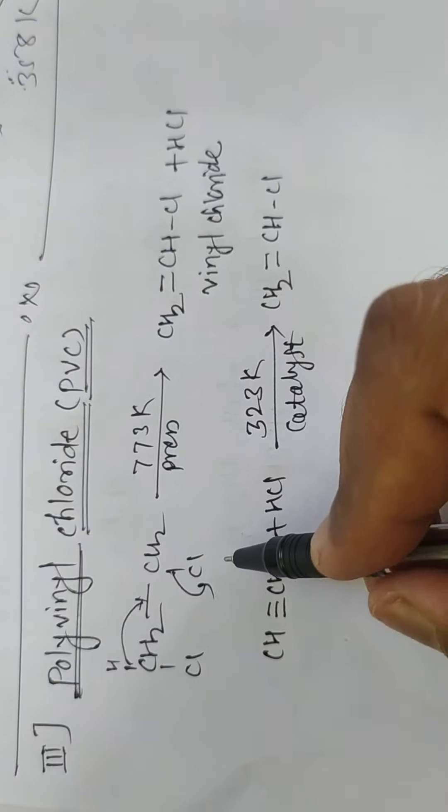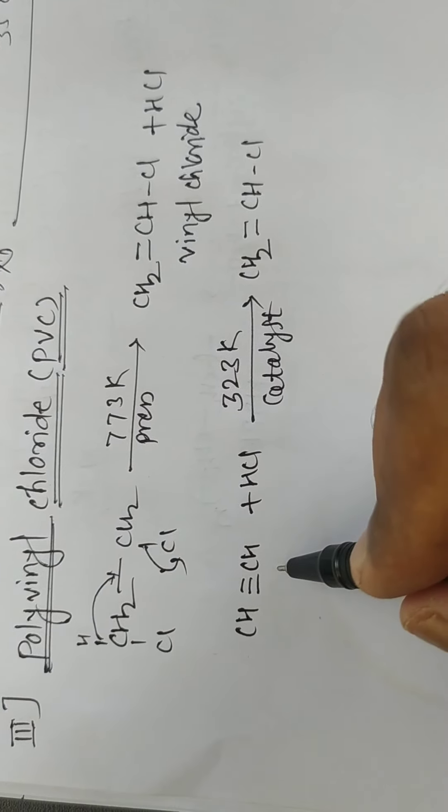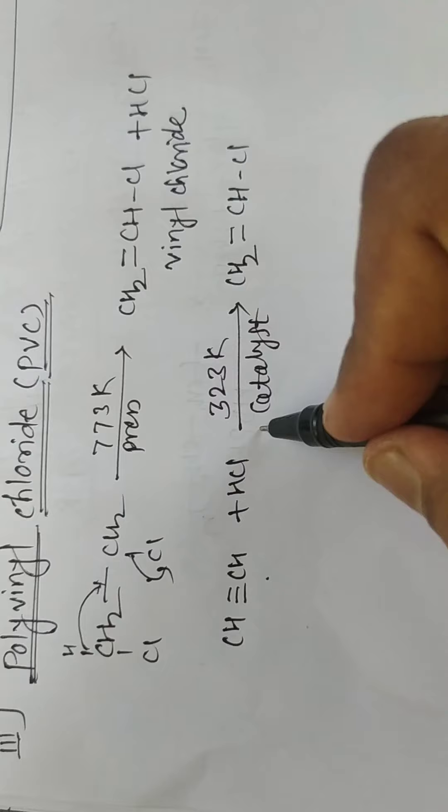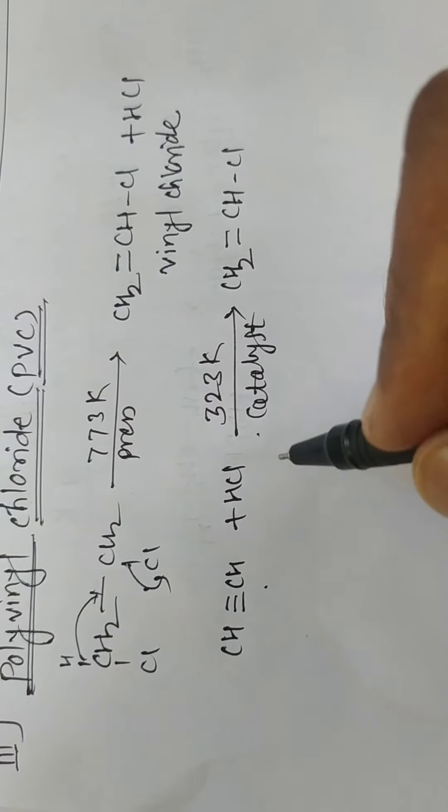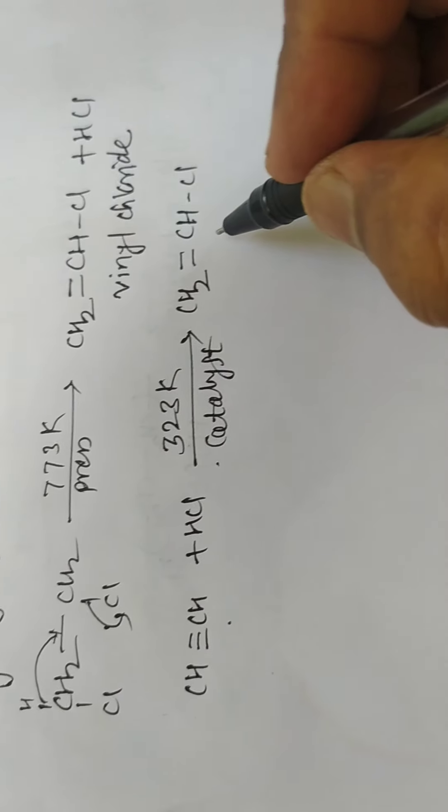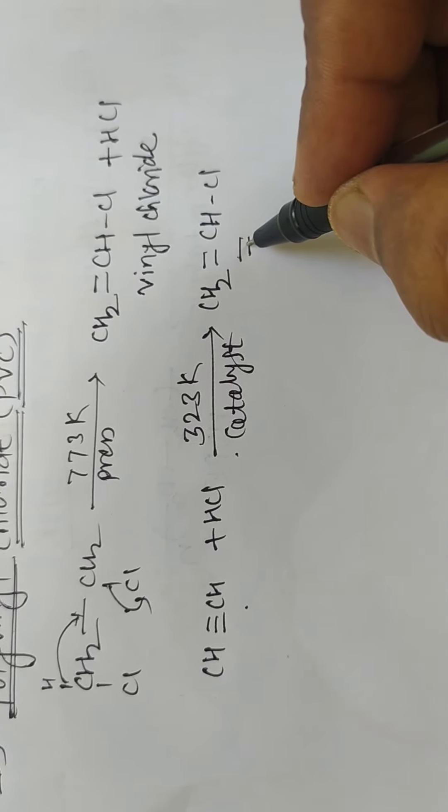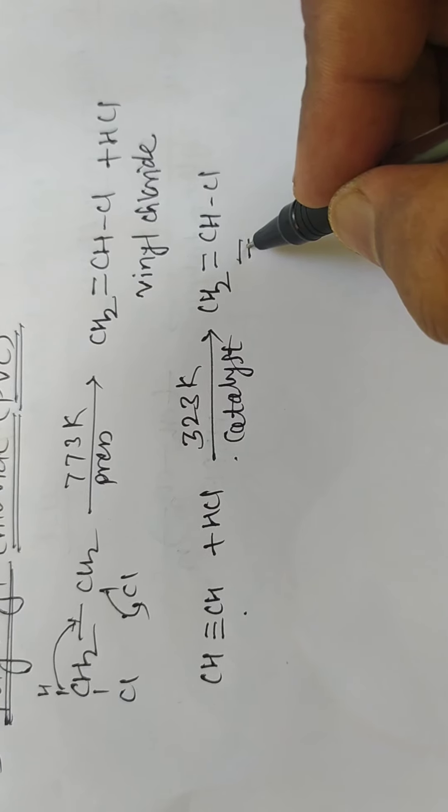Vinyl chloride can be obtained by cracking of ethylene dichloride as well as by adding acetylene with HCl. The polymer is manufactured by free radical polymerization of vinyl chloride. This vinyl chloride undergoes free radical addition polymerization to give polyvinyl chloride.